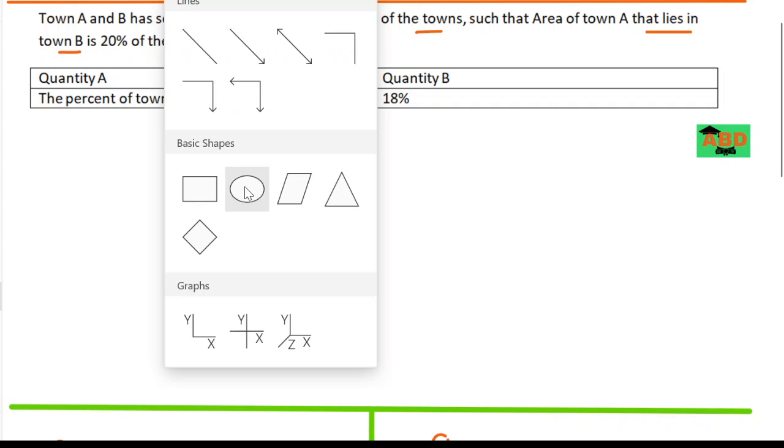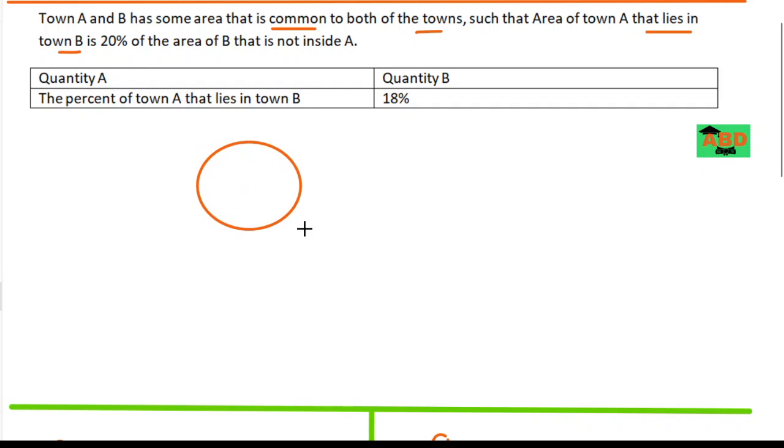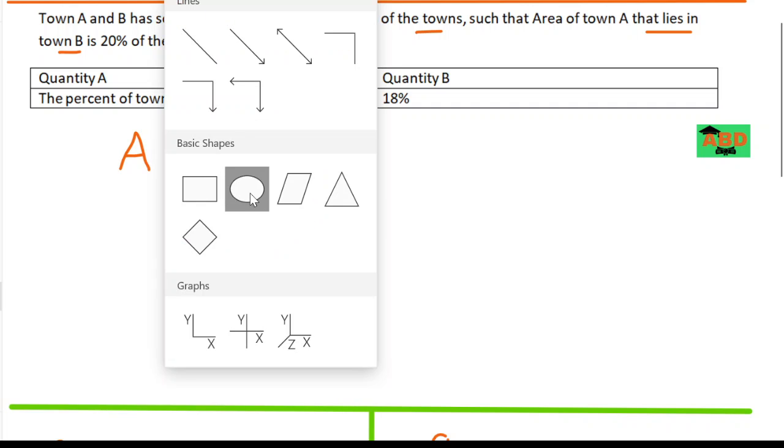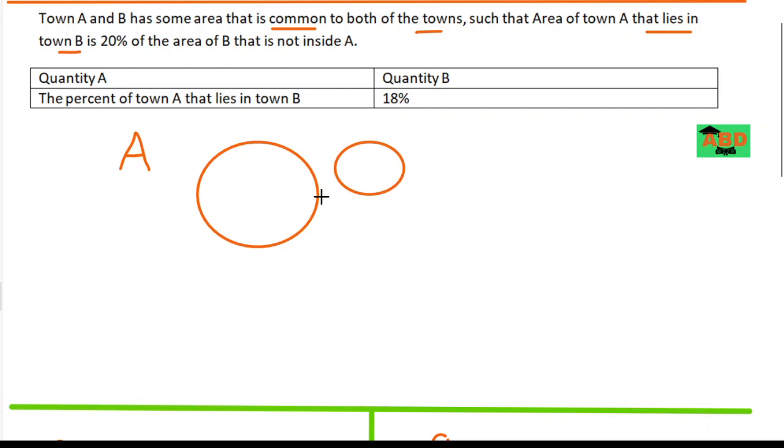So I have one circle here. Let's call it A. Then I'm going to come up with one more circle over here. Since there is an overlap, let's call it B. Okay, so far so good.